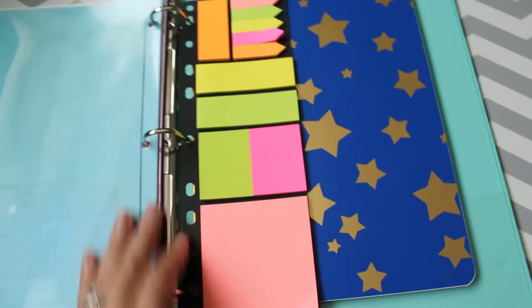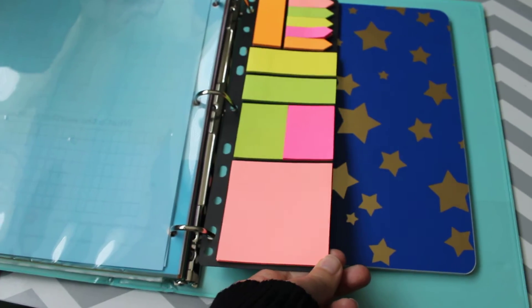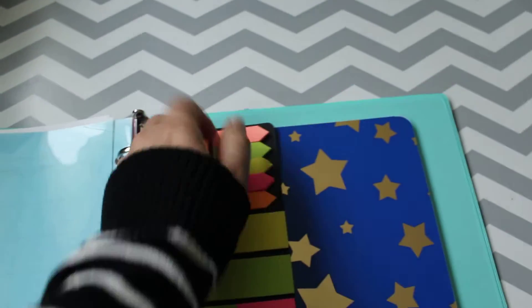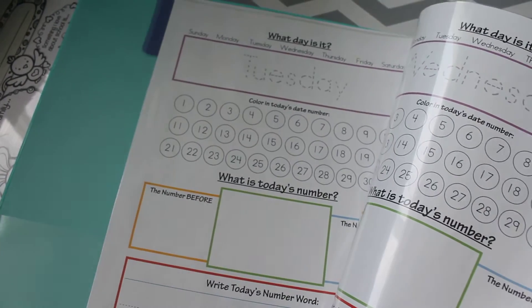Then back here at the back, this thing is kind of cool, I got this at Dollar Tree. It just clips right in so it's really nice and handy. Then I will tab whatever they need to do for the day, so like if it's Tuesday I'll put a tab on Tuesday so they know to flip it open to Tuesday.